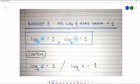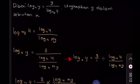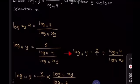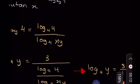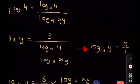Soalan 4B: Diberi log Y asas 4 sama dengan 3 per log 4 asas XY. Ungkapkan Y dalam sebutan X. Langkah pertama, kita perlu tukarkan log 4 asas XY menjadi log asas yang sama, iaitu log asas 4. Jadi log 4 asas XY bila tukar akan dapat log 4 asas 4 per log XY asas 4. Seterusnya, masukkan balik dalam persamaan yang diberi dalam soalan di atas.